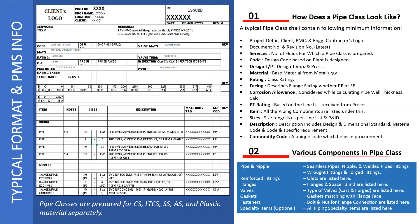Any pipe class will indicate for what kind of service and fluid we have to use that particular pipe class. Then the design code — this is really important. The applicable code must be mentioned in the PMS. For example, for a process plant this will be ASME B31.3, and for a power plant it may be ASME B31.1.